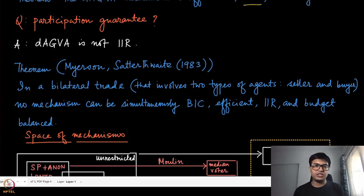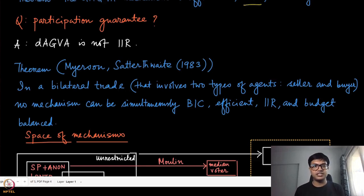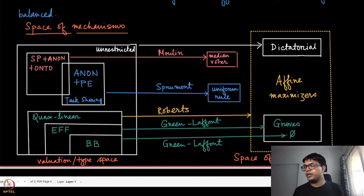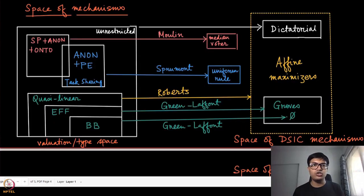This essentially seals the problem: we cannot weaken the mechanism further unless we change some properties or go for other approaches like approximation. That concludes the discussion of mechanism design in the scope of this course. Let me give a broad pictorial overview of all the results discussed, covering the space of mechanisms.